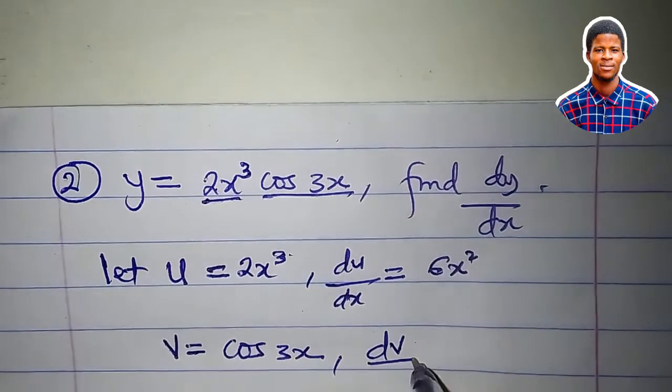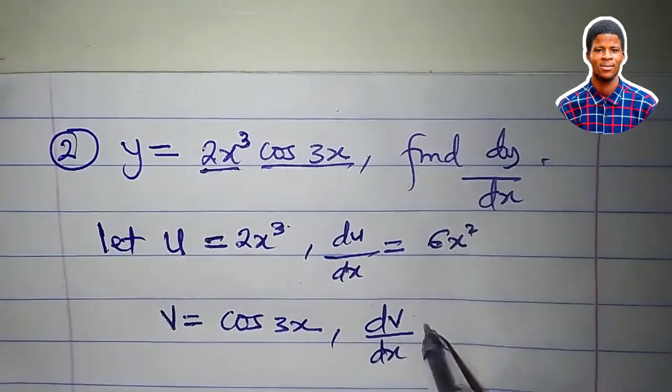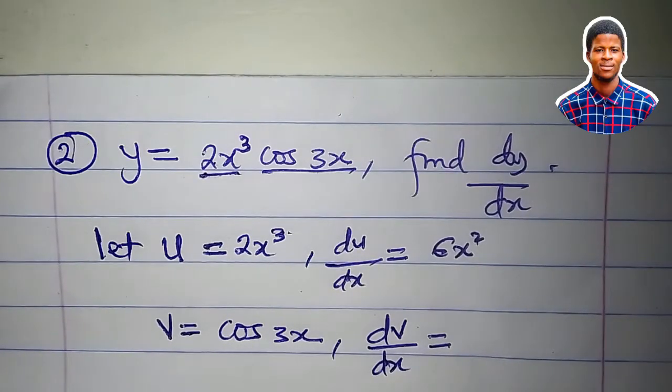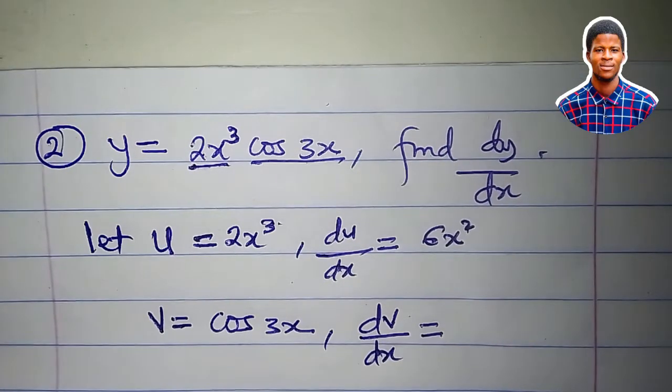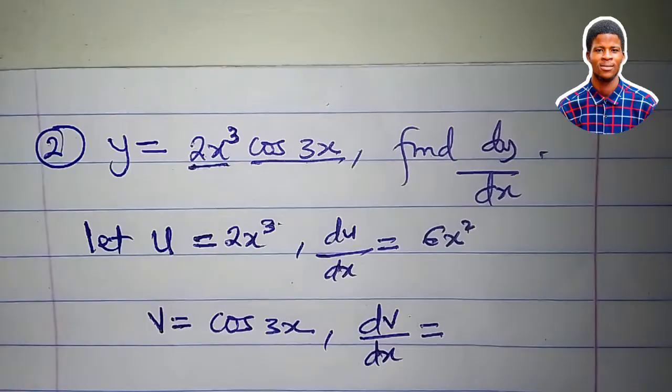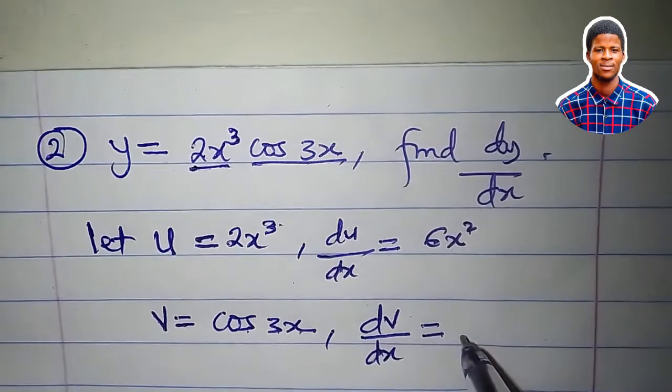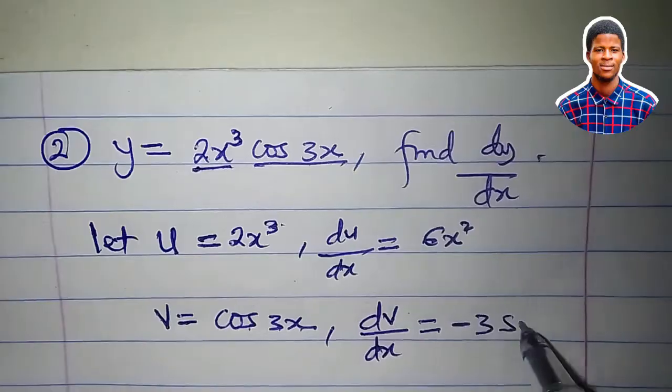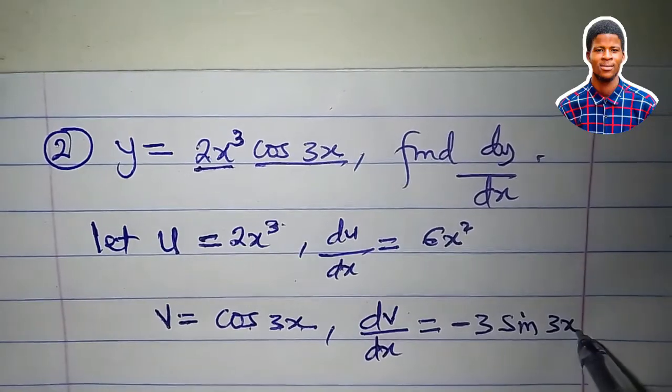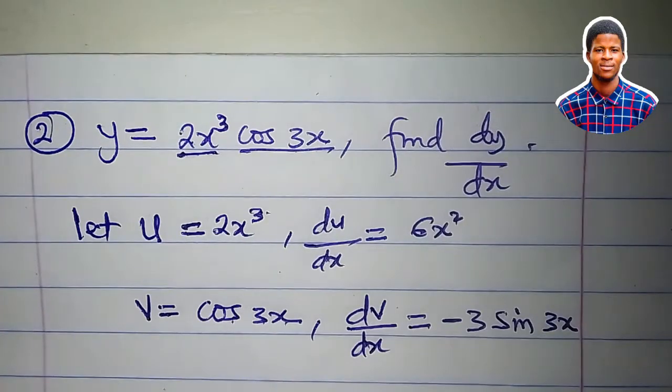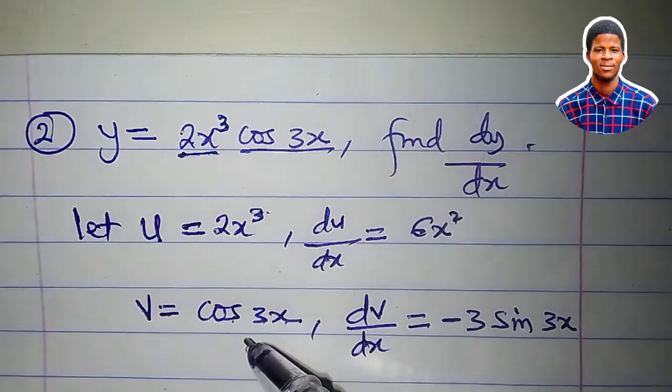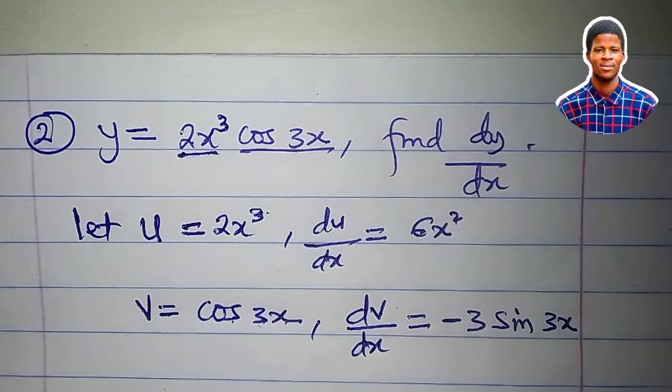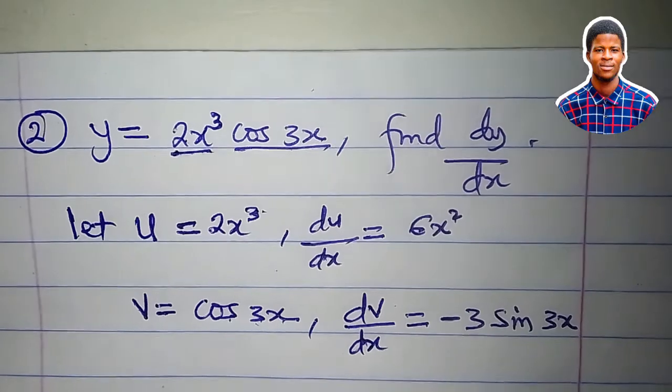Then dv/dx would be equal to what? Remember, differentiate cos x to get minus sine x. If you differentiate cos 3x, you will get minus 3 sine 3x. We actually use the chain rule to explain the derivative of cos kx. So you can go and watch the video on chain rule if you understand better.